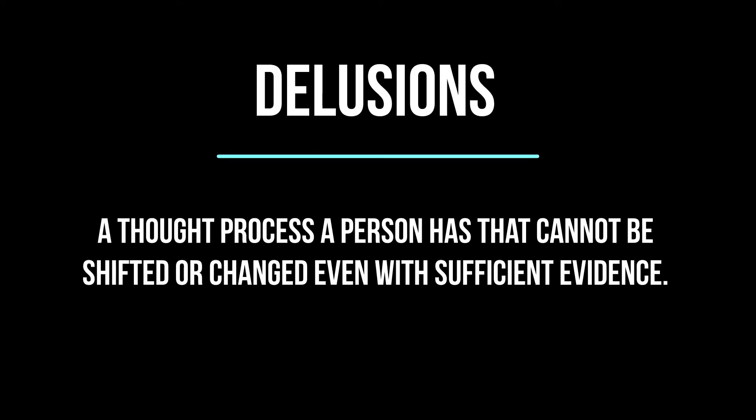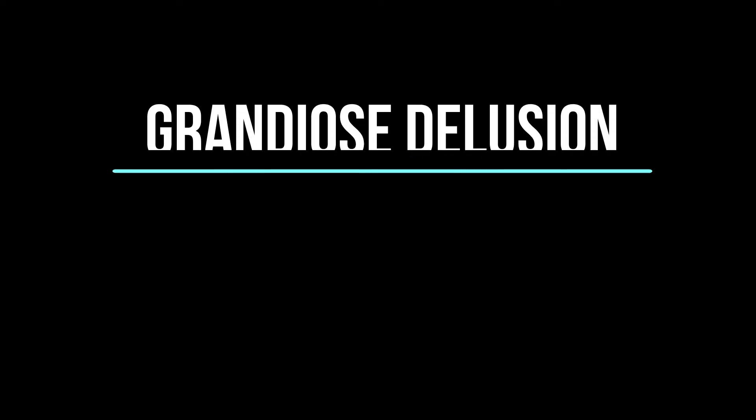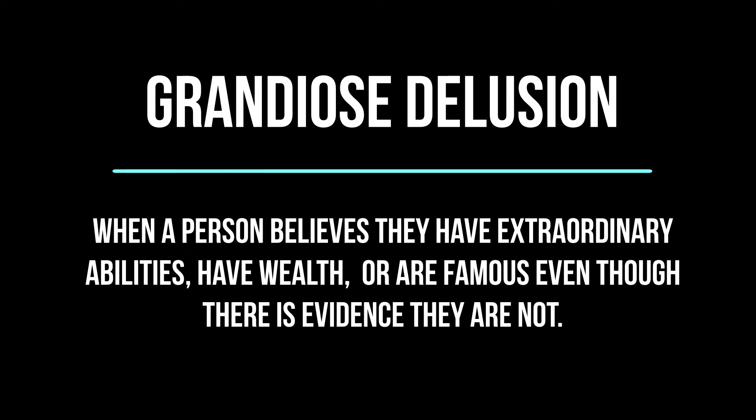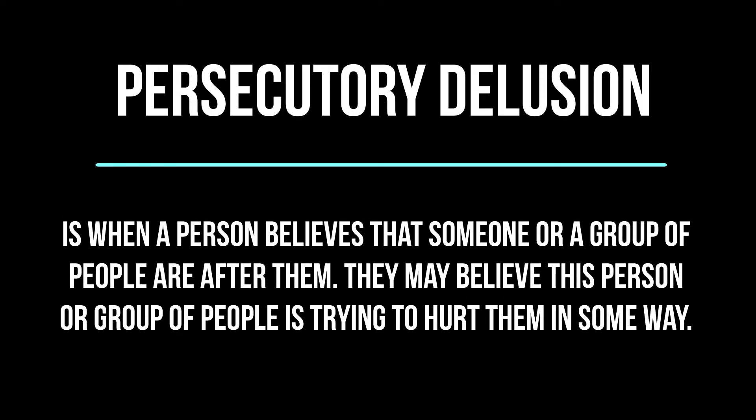Now let's move on to delusions. A delusion is a thought process a person has that cannot be shifted or changed, even with sufficient evidence that that thought process is not valid or true. A grandiose delusion is when a person believes they have extraordinary abilities, extreme wealth unlike others, or they believe themselves to be famous — they may think they are Jesus, Buddha, or even God. A persecutory delusion is when a person believes that someone or a group of people are after them, trying to hurt them in some way, without any evidence — such as believing the FBI or CIA is after them.